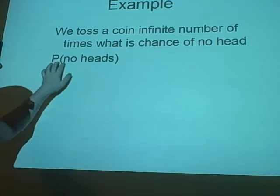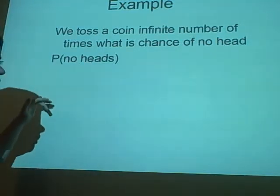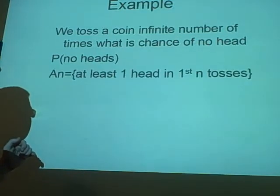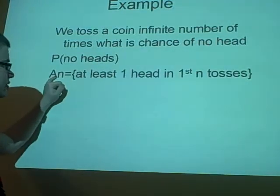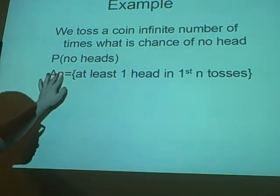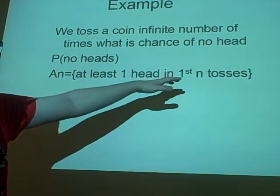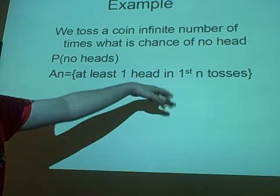So, first off, we have to write down the probability, we've got no heads. It just makes it look a bit neater when you're working. Next, we have the event. So, we have our A N, which is our probability event, that at least one head in the first N tosses, so the first N being any number.